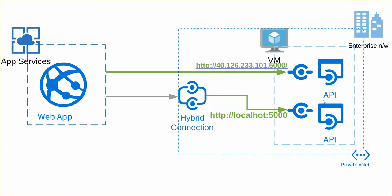Once you have installed the Hybrid Connection Manager and set up your hybrid connection configuration on the website, what will happen is when the web application makes a localhost 5000 request, that request won't go to the internal localhost of the Azure VM where the web application is deployed — it's just an IIS application running on a Microsoft-managed VM. When you install hybrid connection and configure the web app for it, the localhost request goes to the hybrid connection endpoint, which then looks inside the corporate network to find that localhost 5000 endpoint and proxies the request.